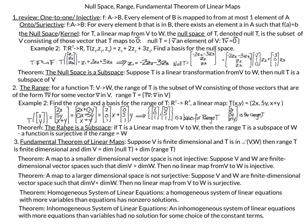We also have two related theorems. First, a map to a smaller dimensional vector space is not injective: if V and W are finite dimensional with dimension of V greater than dimension of W, then no linear map from V to W is injective. Second, a map to a larger dimensional space is not surjective: if dimension of V is less than dimension of W, then no linear map from V to W is surjective.